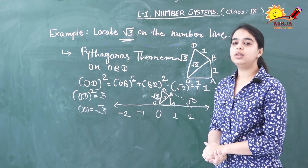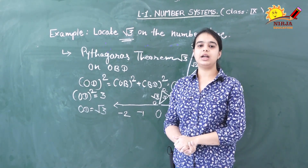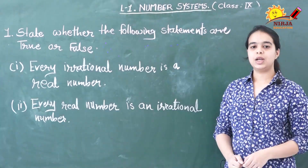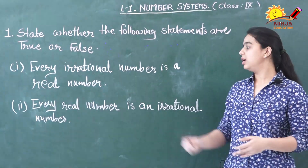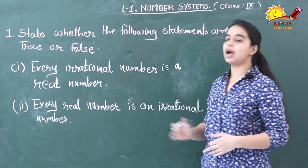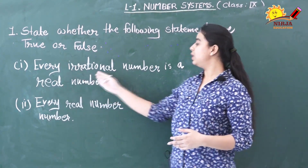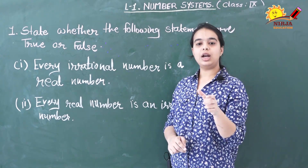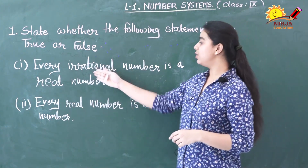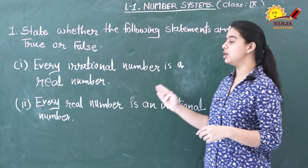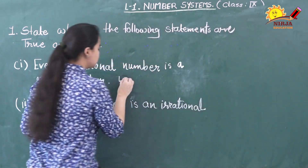This way you can locate any irrational number on the number line. Before ending our session, let me check if you have a clear idea about real numbers. I have listed two statements and you need to tell whether they are true or false. First statement: every irrational number is a real number. As you all know, real numbers are the collection of rational numbers and irrational numbers. So every irrational number is a real number — this statement is true because real numbers include every irrational number.